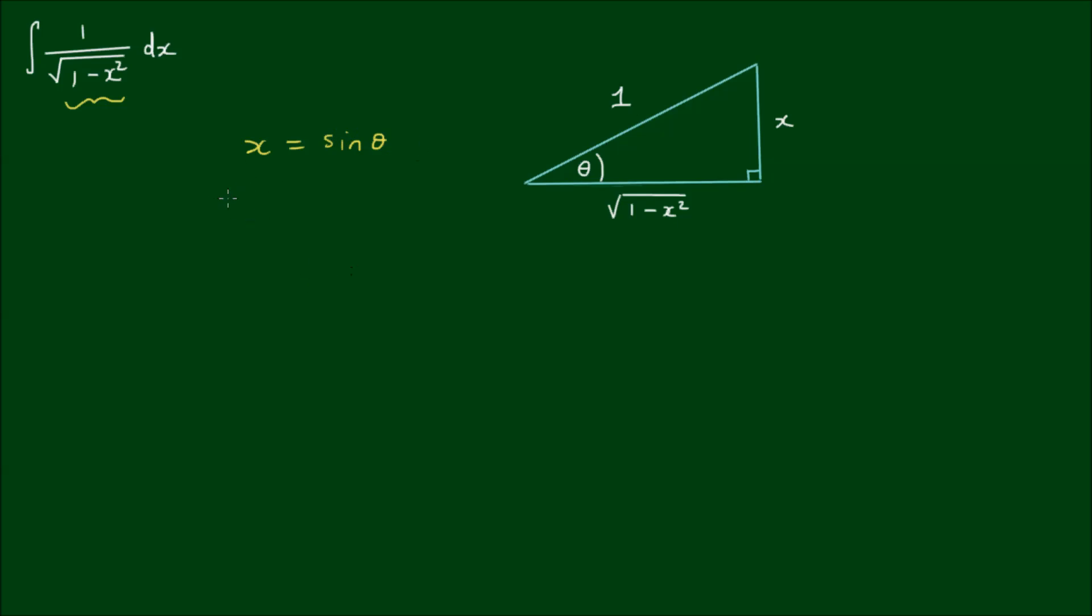Let's take the derivative of x with respect to theta. So dx d theta equals... The sine function differentiates to cosine, and I can separate the differentials and write dx equals cosine of theta d theta.